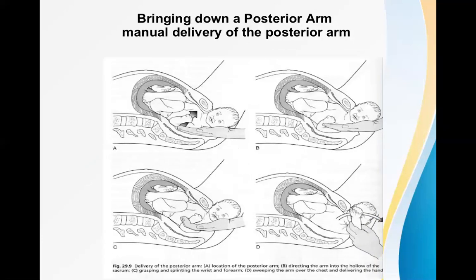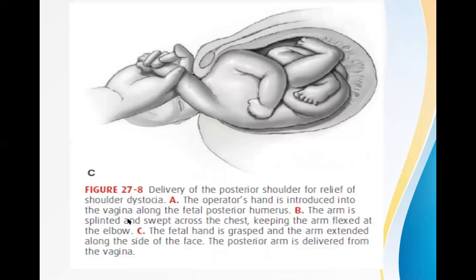After delivery of the anterior shoulder, to deliver the posterior one you should gradually extend the head towards the mother's abdomen. The posterior shoulder along with the posterior arm is delivered. After both shoulders are delivered, the body follows easily as it has a smaller diameter.